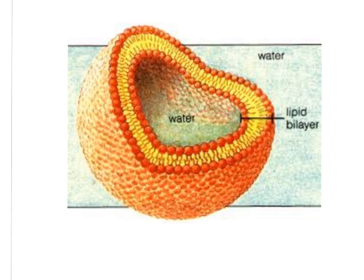If we put that phospholipid bilayer back into the cell and think of it as part of the cell membrane, we have here the hydrophilic heads and the hydrophobic tails in between. This is as though we were cutting out a cross-section of the cell. We have water in here and water on the outside of the cell. So we have those hydrophilic heads next to the water on the inside and the outside, and the tails inside because they're hydrophobic.